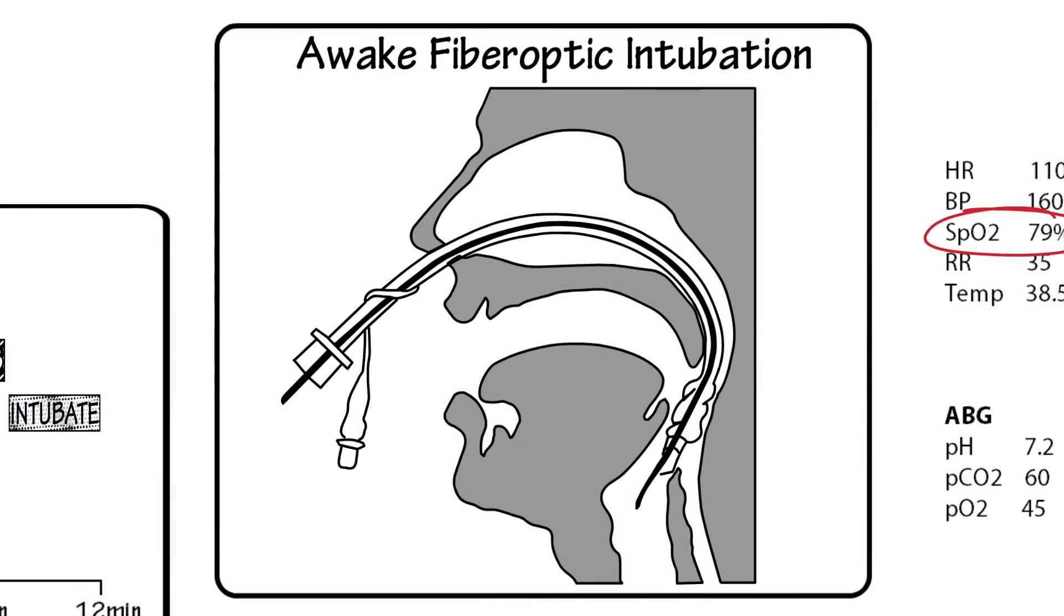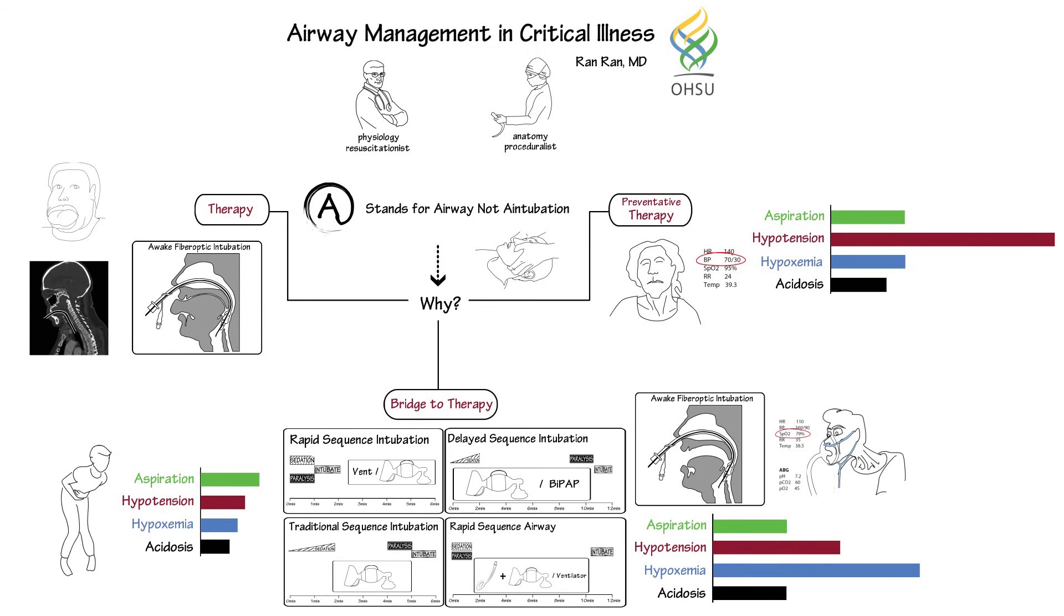I hope you enjoyed this schema for thinking about intubation. Even if you never do this procedure, take an active role. You know the patient the best. Discuss your concerns and goals with a proceduralist to come up with a plan most suitable for your patient, minimizing risk and optimizing benefit.